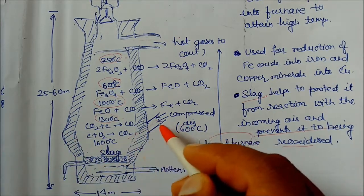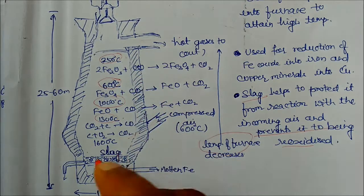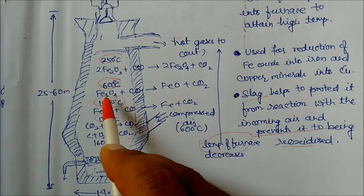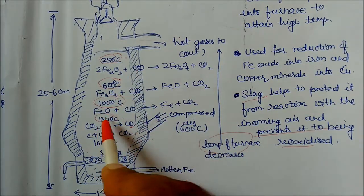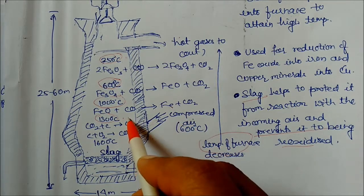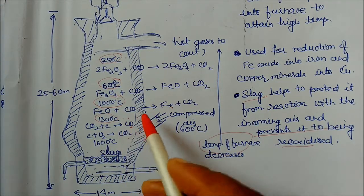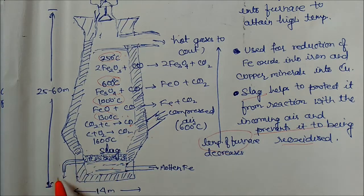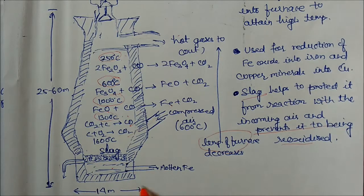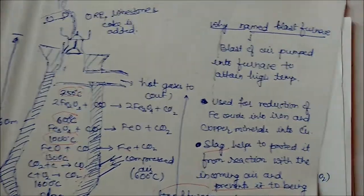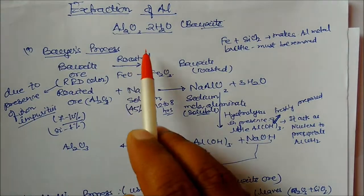Compressed air is blasted in. Carbon monoxide forms first and moves upward, removing oxygen from iron oxides — Fe3O4 and FeO — forming sponge iron. Simultaneously, impurities combine with flux to form slag. Molten iron is heavier than slag; slag is separated out through an inclined slope, and molten iron — pig iron — is collected separately.